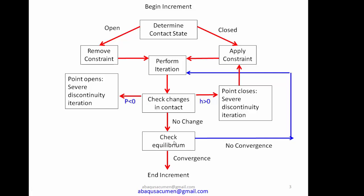In the equilibrium iteration, Abaqus checks: summation of forces equals zero, summation of moments equals zero, and displacement constraint equilibrium. If equilibrium is achieved, the increment ends with a converged solution. If not, it goes back to the severe discontinued iteration to check contact status again. If the contact status has changed — for example from two opens and ten closed to three opens and seven closed — it performs another equilibrium iteration.